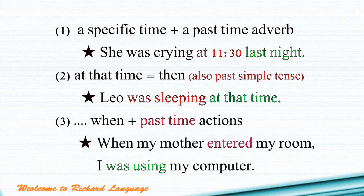Whenever you use past continuous tense, we use it in 3 different ways. The first one is: we use a specific time plus a past time adverb. For example, 'at 11:30' is a time, and 'last night' is a past time adverb. So whenever you see a certain time plus a certain past time adverb, remember to use the past continuous tense.